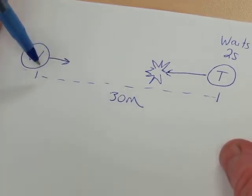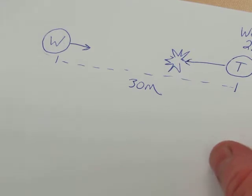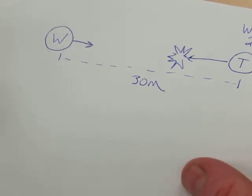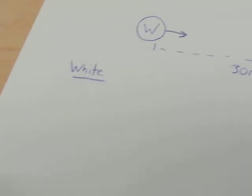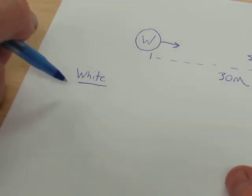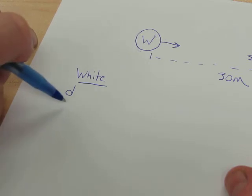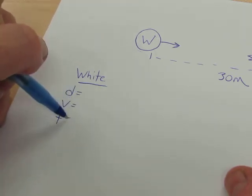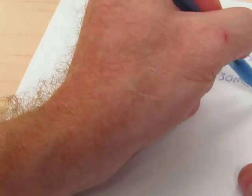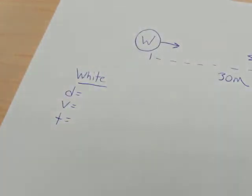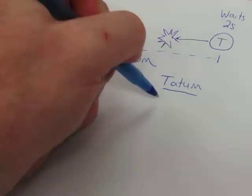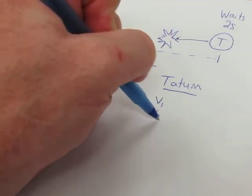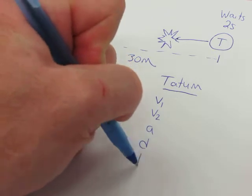So let's start by making a givens list. White, if you notice on your page, is a constant speed object. White is not accelerating, so I only wrote three things for him: a distance, a speed, and a time. Tatum is an accelerating runner, so his givens list has a full list here: V1, V2, A, D, and T.